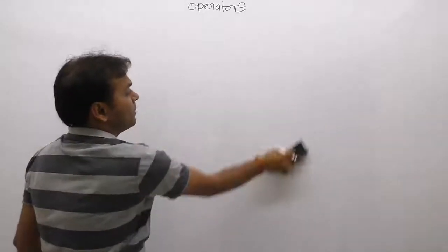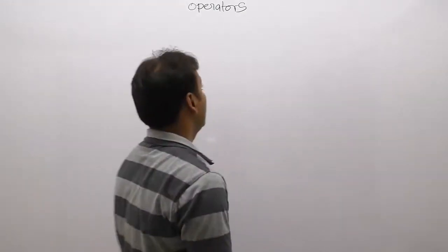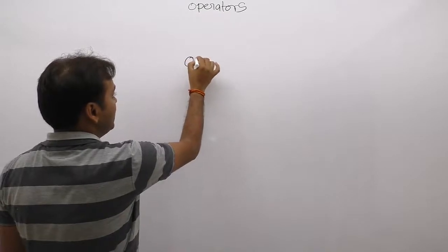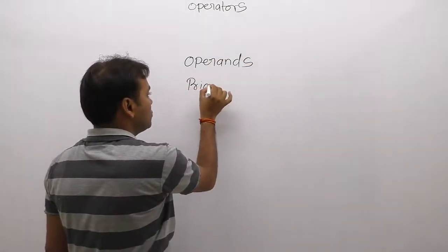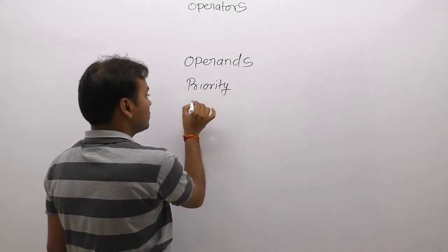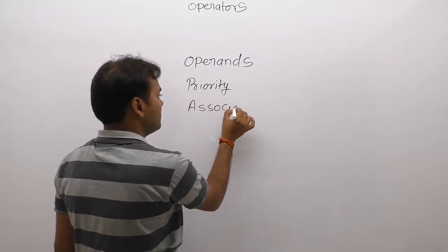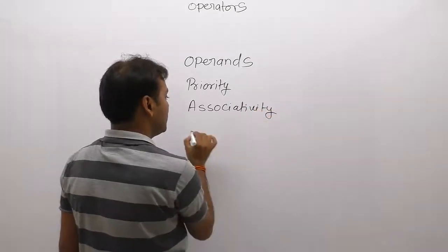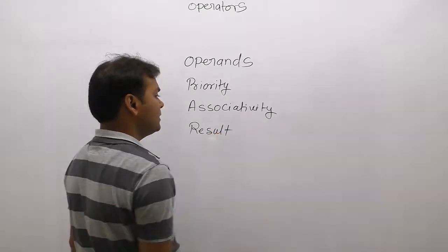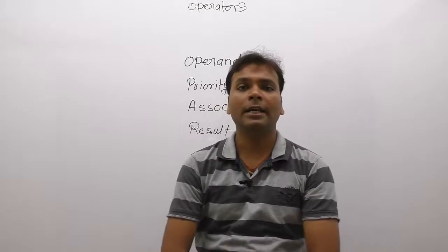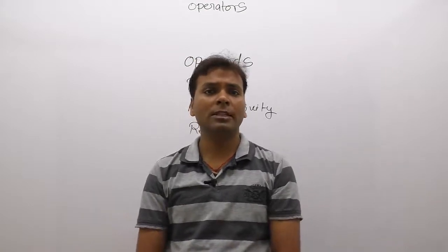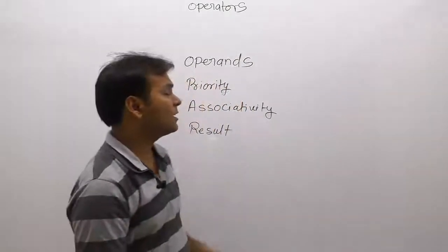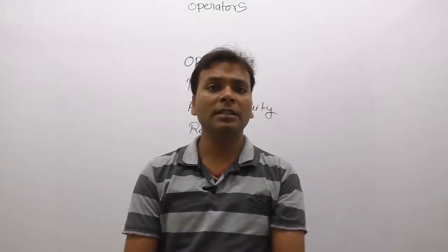First of all, what is the definition of operators? Anything which will take some operands, perform some operations, and follow priority or associativity rules — and on that basis produce exactly a single result — that thing can be considered an operator. Operators are generally represented in the form of symbolic representation.